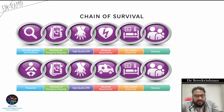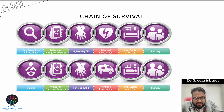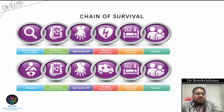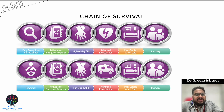Then you need to think about advanced resuscitation — advanced airway, drugs — followed by post-cardiac arrest care and the recovery phase. That is the chain of survival for in-hospital cardiac arrest. The key elements are: early recognition and prevention, activation of emergency response, high quality CPR, advanced resuscitation, post-cardiac arrest care, and recovery.